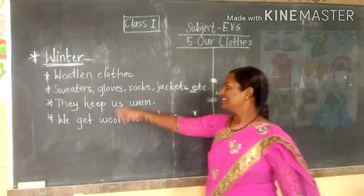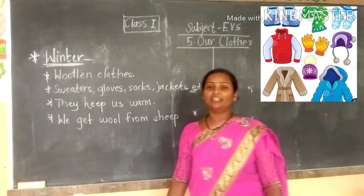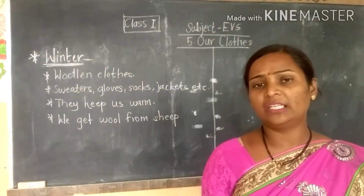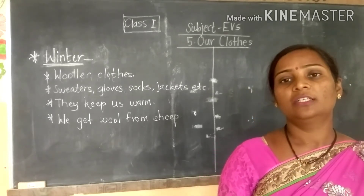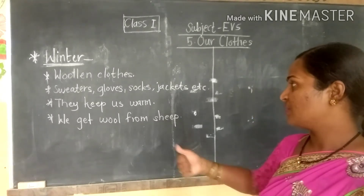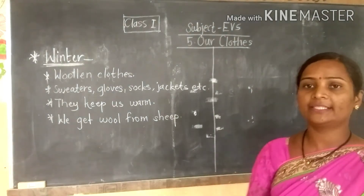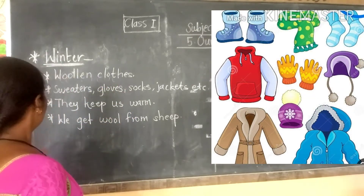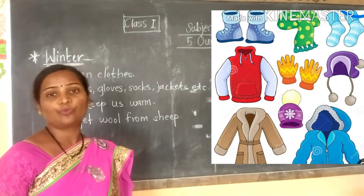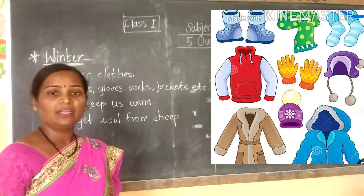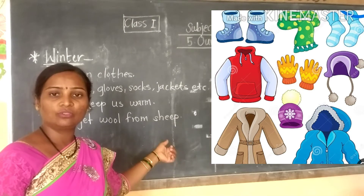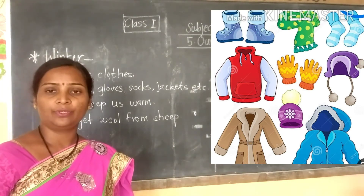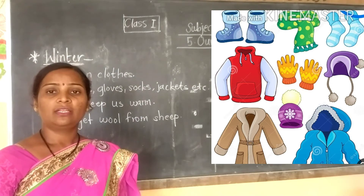In winter, we use woolen clothes because in winter season there is too much cold weather. That's why we wear woolen clothes — sweaters, socks, and jackets are examples of woolen clothes. They keep us warm and protect us from the cold air. We get wool from the sheep.